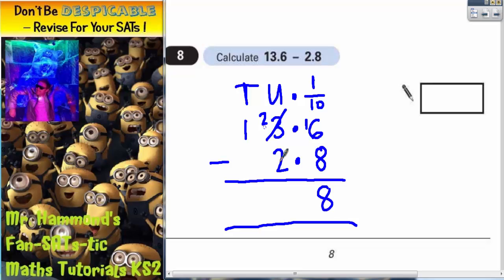In eight, two take away two is zero, and one take away nothing here, one take away nothing is one. The only thing we haven't done yet is put a decimal point in. They all must line up, so our decimal point must go here.